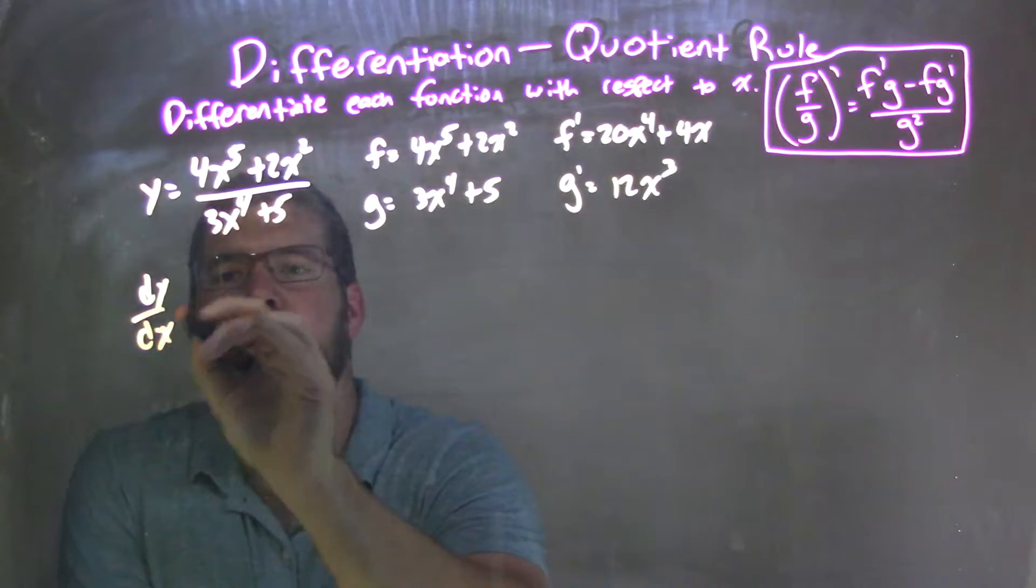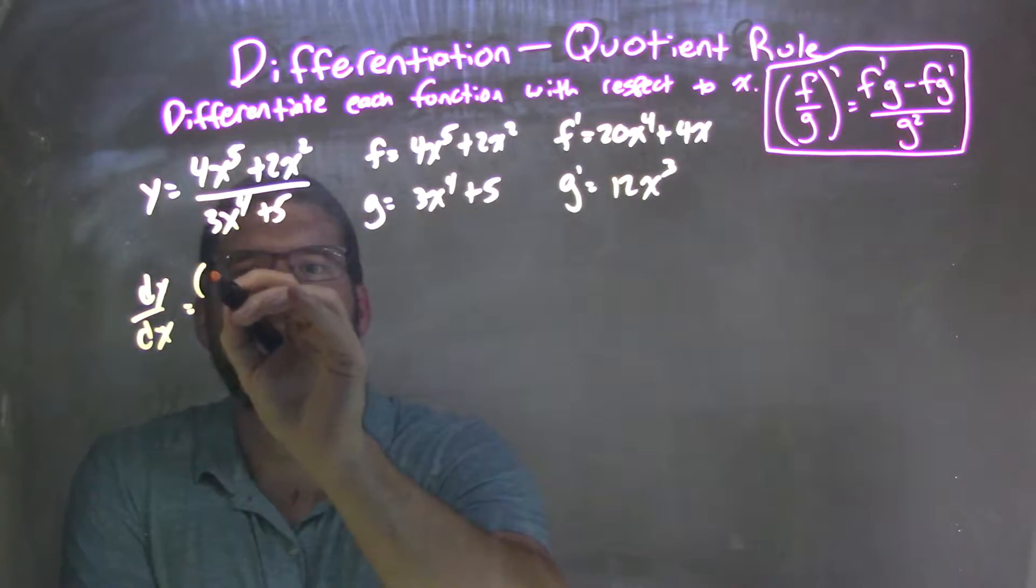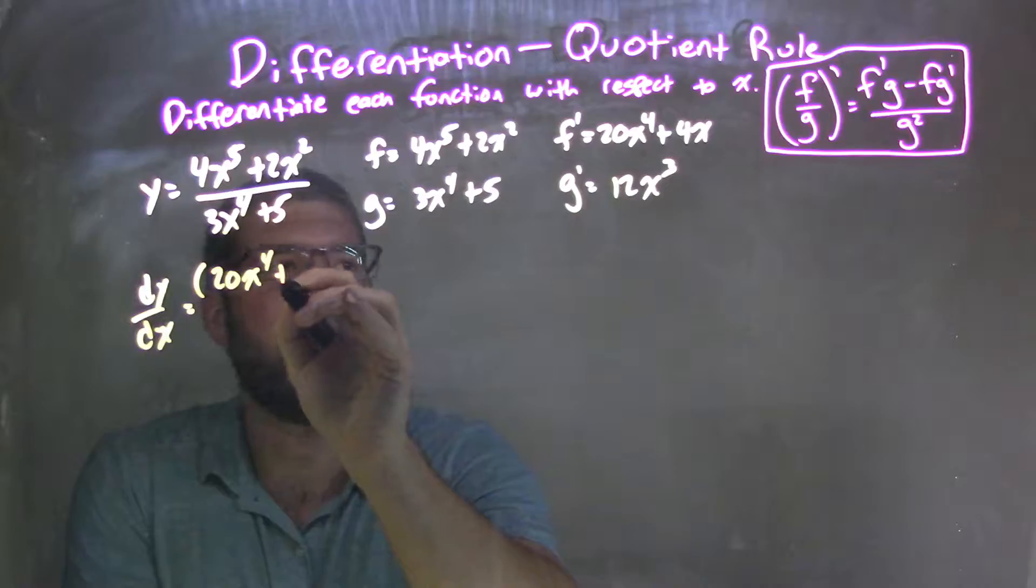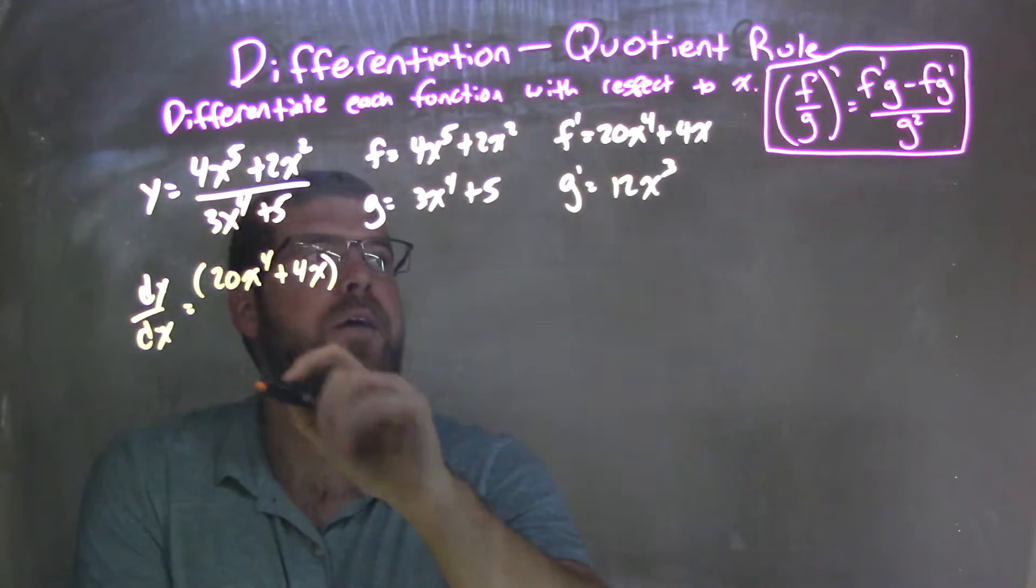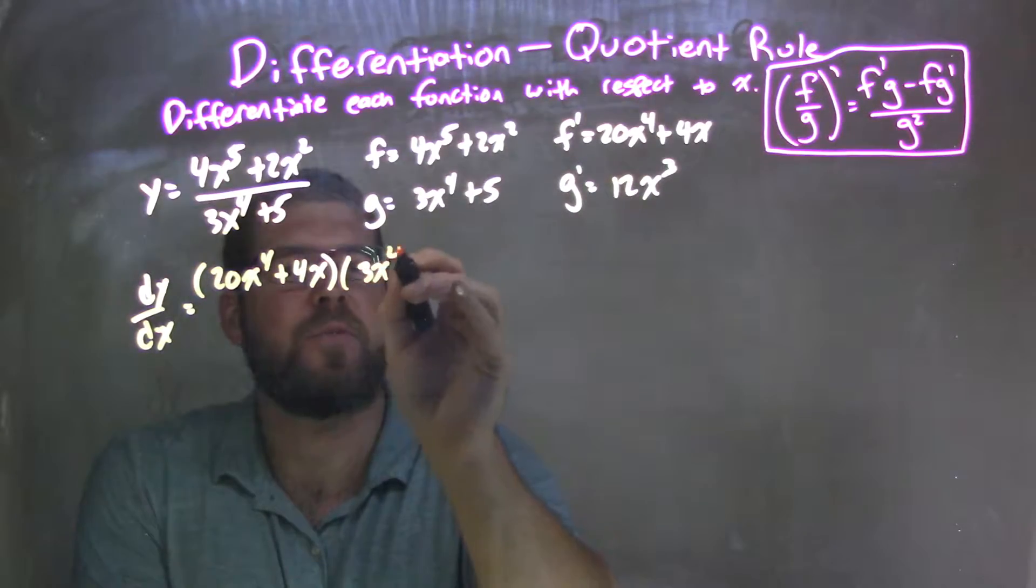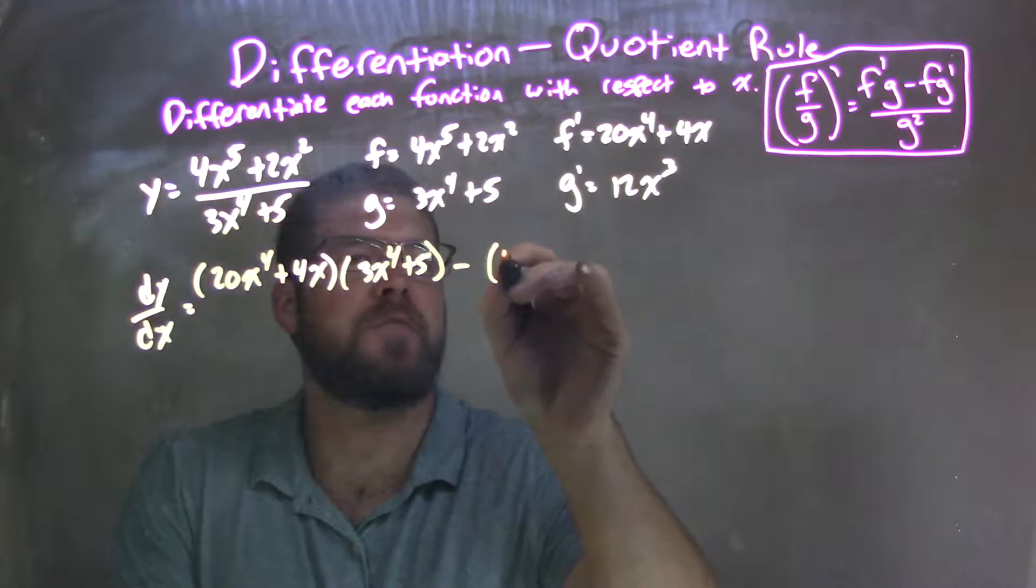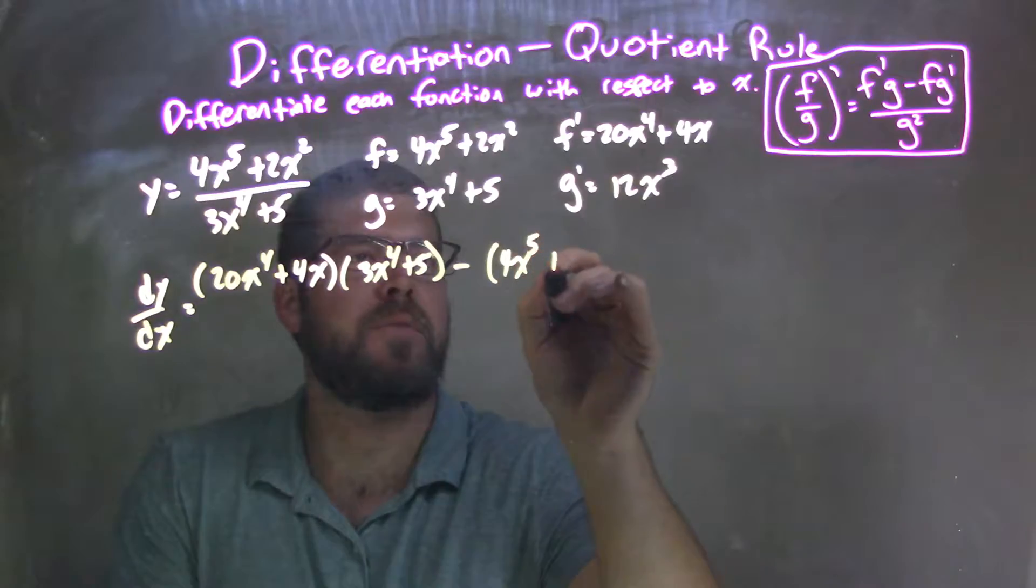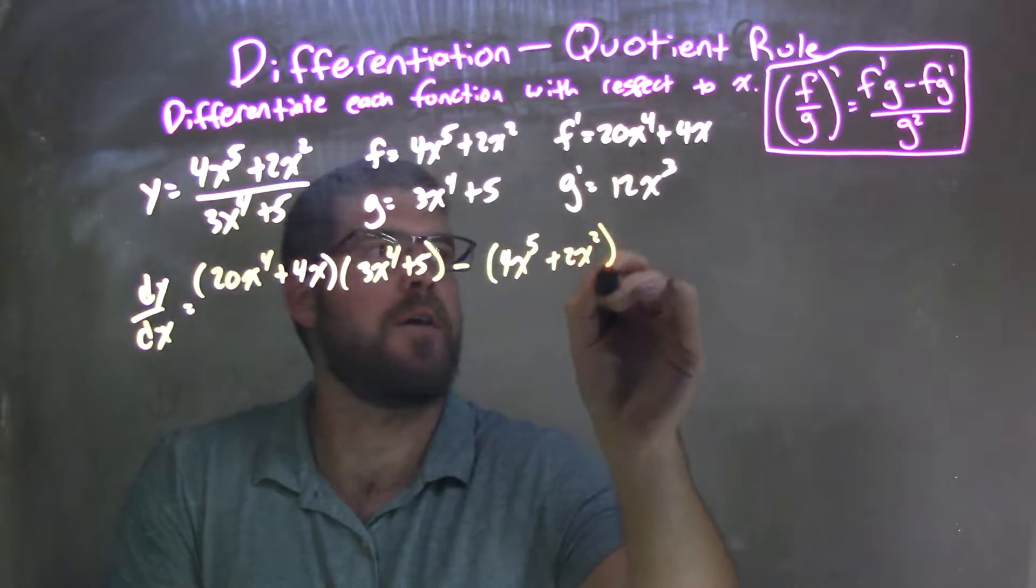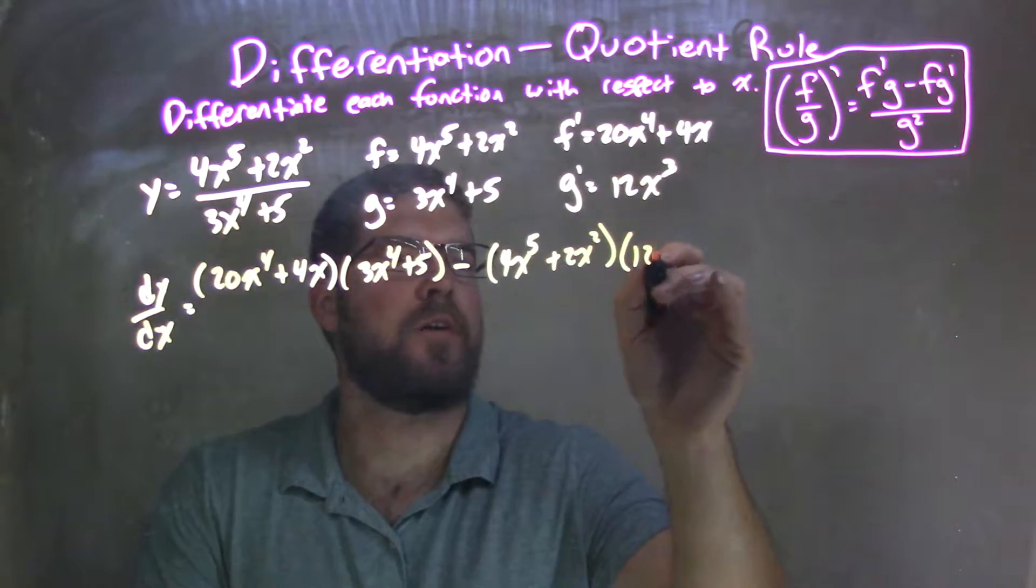dy dx equals f prime, which is 20x to the fourth. So now it's just a plug and chug. And then times g, which is 3x to the fourth plus 5, minus f, which is 4x to the fifth plus 2x squared, times g prime, which is 12x to the third.